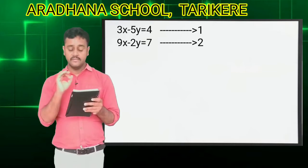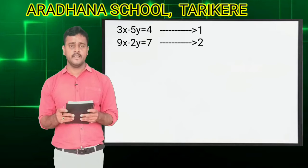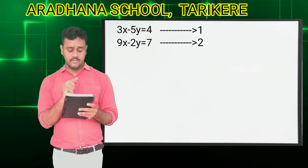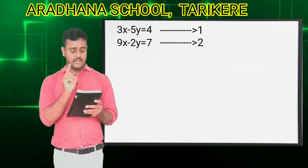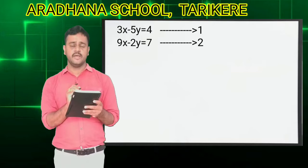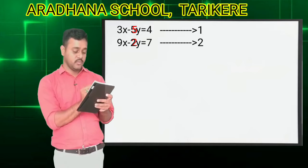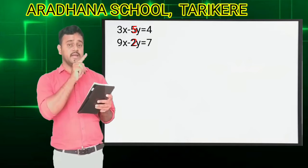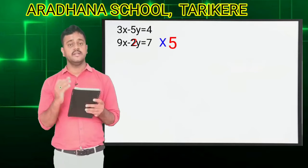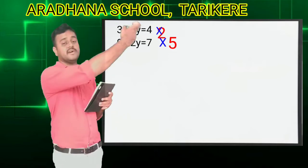Now I will choose any variable to eliminate — I will choose y. You can eliminate either x or y, but I will eliminate y. So look at the coefficients. The first equation coefficient of y is 5, and the second equation coefficient of y is 2. If you want to eliminate, choose the coefficients: the coefficient from the first equation is 5, and from the second equation is 2.